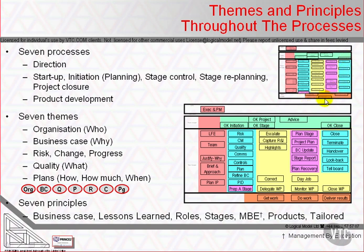This bottom layer being the product delivery. And here are four or five levels of management: corporate program management above the project, project board directing, project manager managing, and then team managers and team members receiving the commission of work packages and executing the work packages.